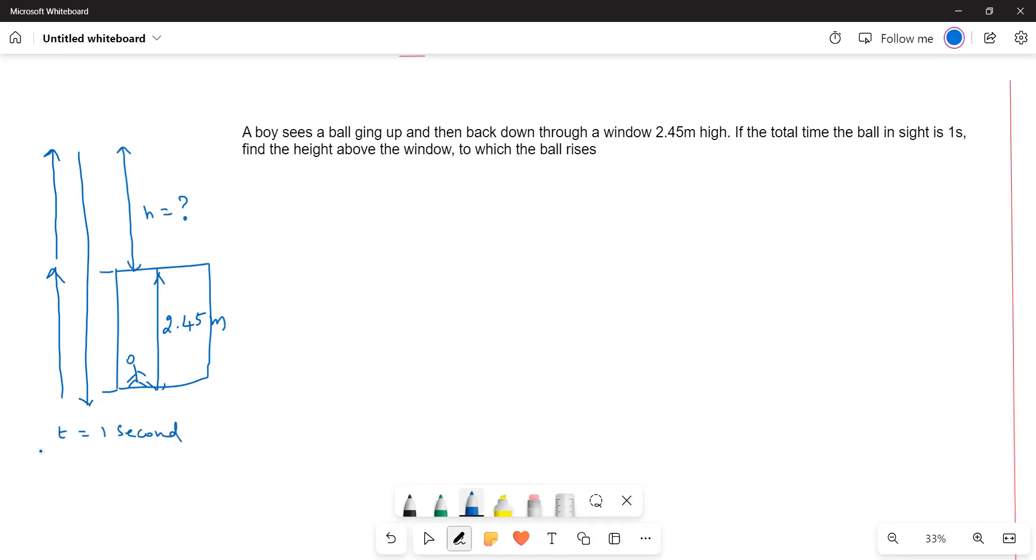This is total time to go up and down the window. So t up is half second, that means 0.5 seconds. And then t down is again another half second, this is another 0.5 seconds, total 1 second.